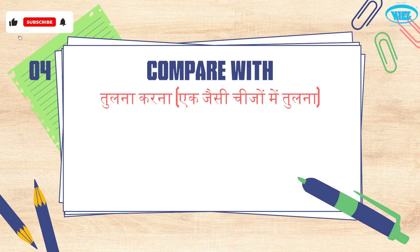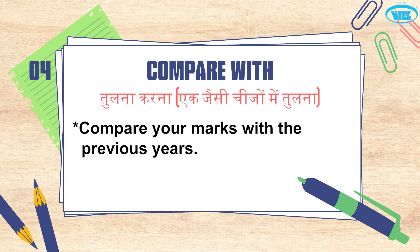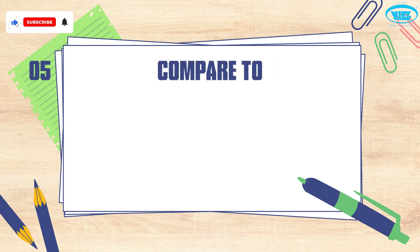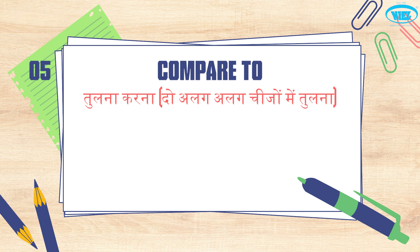The next is 'compare with', which means to make a comparison. You use 'compare with' when comparing similar things to each other. For example: 'Compare your marks with the previous year's.' And: 'He always compares me with my brother.' Next is 'compare to' — it also means to make a comparison, but the difference is that 'compare to' is used when comparing two different kinds of things.